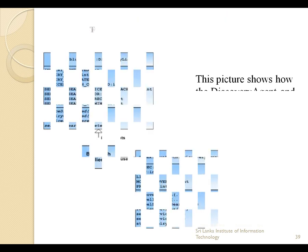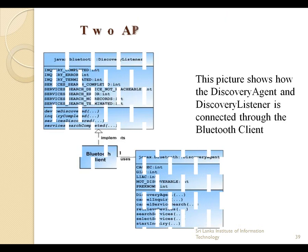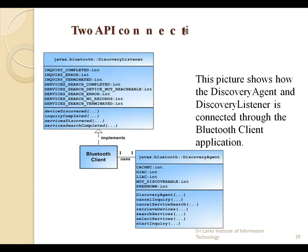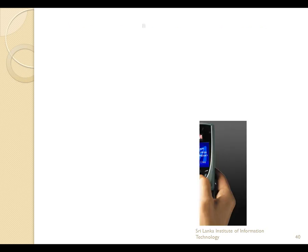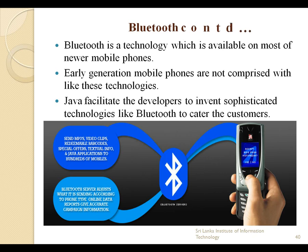This is a diagrammatic representation of how the discovery agent and discovery listener are connected through the Bluetooth client application. Bluetooth is a technology which is available on most newer mobile phones. Early generation mobile phones did not include such technologies. Java facilitates developers to invent sophisticated technologies like Bluetooth to cater to customers.